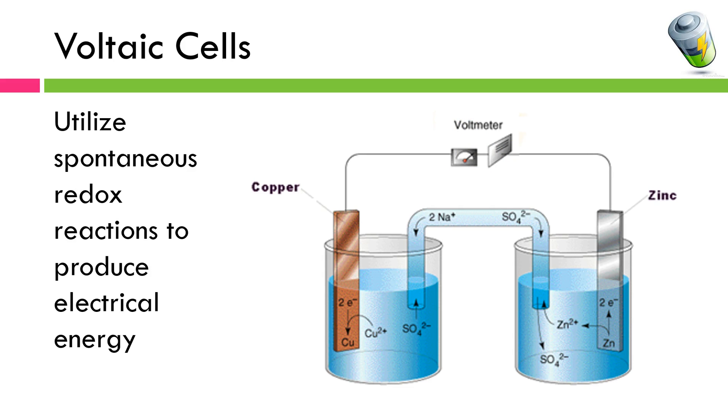In our Voltaic Cells we're going to utilize spontaneous redox reactions to produce electrical energy. So we have talked about spontaneous reactions in general earlier this semester. Remember spontaneous means proceeding in a way that releases energy. So a Voltaic Cell is going to use these spontaneous reactions to produce energy, and that's the brilliant part of the battery. We've taken chemical energy and we're converting it into electrical energy.